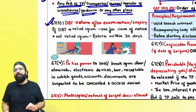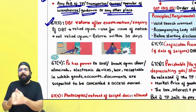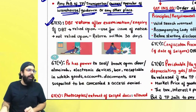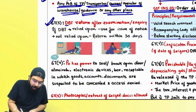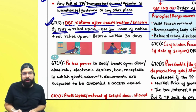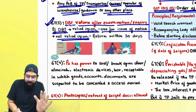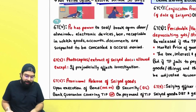Section 67 subsection 3 says: if they have taken some documents, books, and things along with them, those shall be returned after examination or inquiry. If documents and books are relied upon, they will use them for issuing a notice. If not relied upon, they will be returned within 30 days.